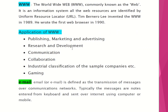Let's start with WWW. What do you mean by WWW? WWW is World Wide Web, commonly known as the web. We always use the web to search something. It is an information system where all web resources are identified by their own Uniform Resource Locator, known as URL. WWW was invented by Tim Berners-Lee in the year 1989, and the first web browser was written in the year 1990.